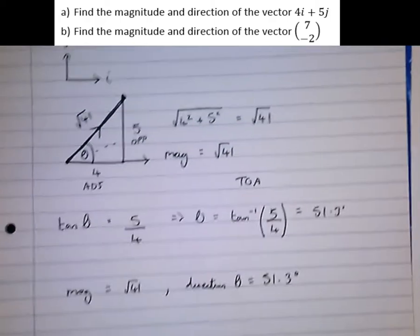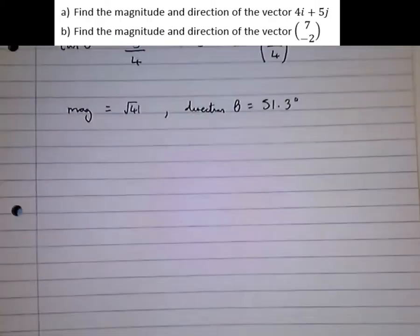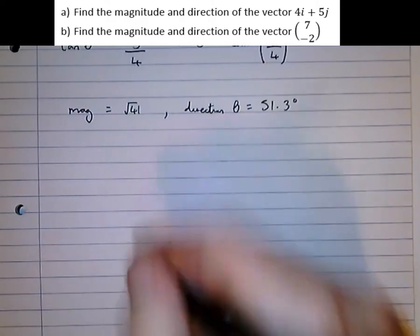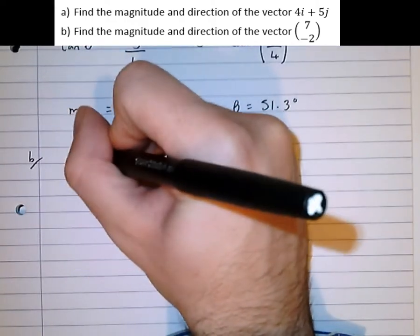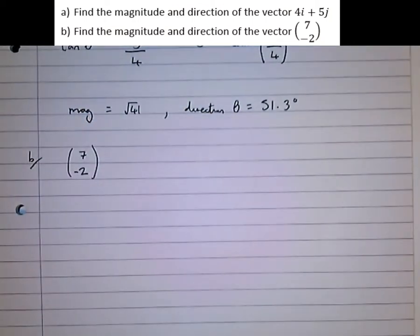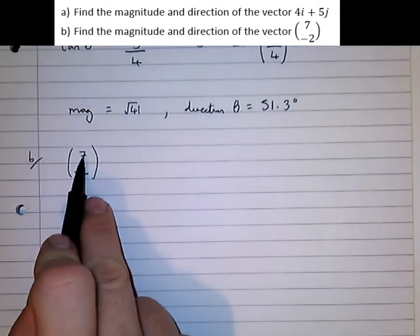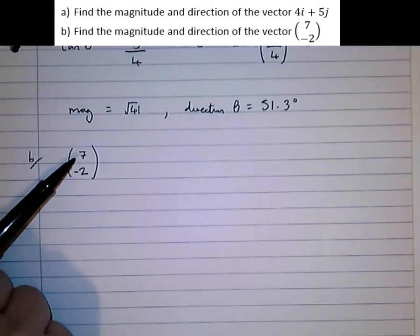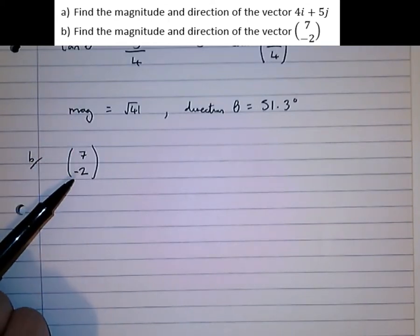Now let's do a similar example, but using the vector in a different form. Find the magnitude and direction of the vector 7, -2. So part B, 7, minus 2. Now this top one is the i direction, much like in vectors from GCSE, this was the x direction, and this one here is the j direction.